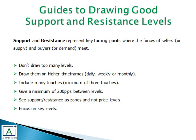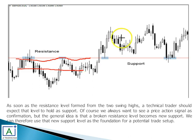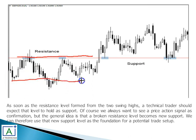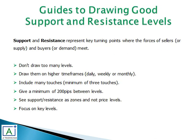Give a minimum of 200 pips before you draw the next level. For example, if you have a line here and the next one is too close, that is incorrect. The next level should have a proper gap — you should always give a good number of pips between levels and not cluster your chart.